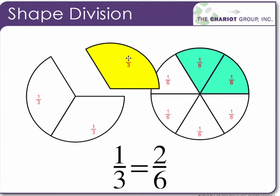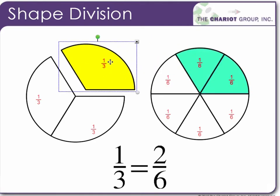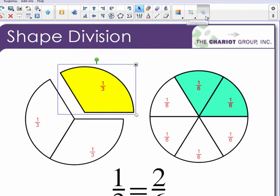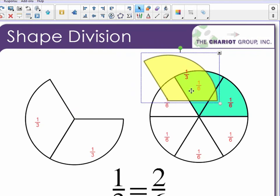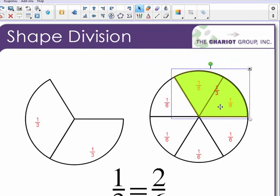If I want to make this even more fun, what I can do is select the 1/3 block, come up here to the transparency fader, slide this down to make it a little bit more transparent so that as I drag that over we can better see that equivalence.